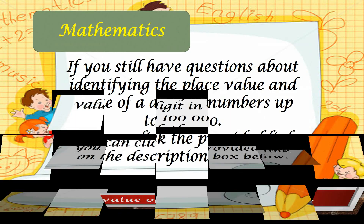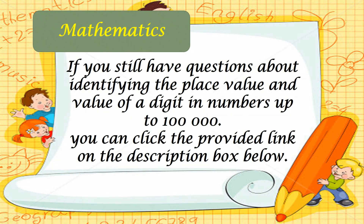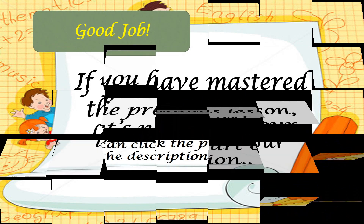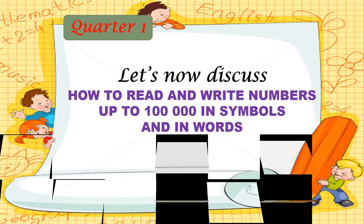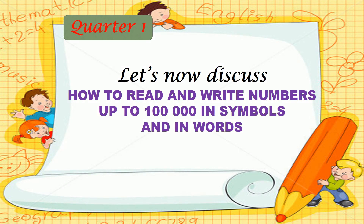If you still have questions about identifying the place value and value of a digit in numbers up to 100,000, you can click the provided link in the description box below. So, if you have mastered the previous lesson, let's now start our discussion on how to read and write numbers up to 100,000 in symbols and in words.